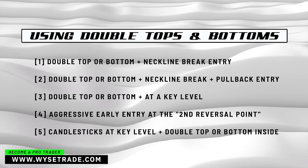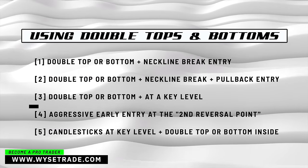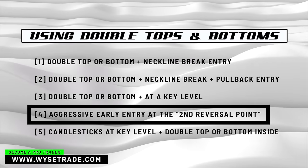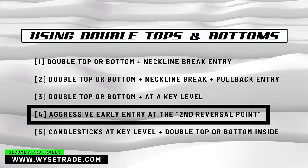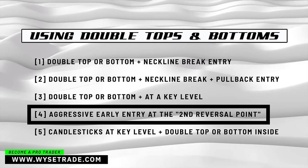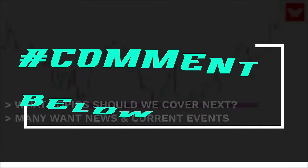The fourth way to use the double top and bottom pattern is to get in through an aggressive early entry at the second reversal point of the double top or bottom pattern. Neckline placed like this.